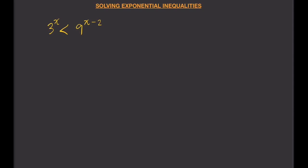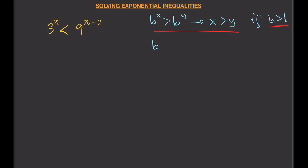The first is that b^x > b^y implies x > y, if b is greater than 1. If b is less than 1, then b^x > b^y implies x < y. So you have to remember these two conditions depending on whether b is greater than or less than 1.